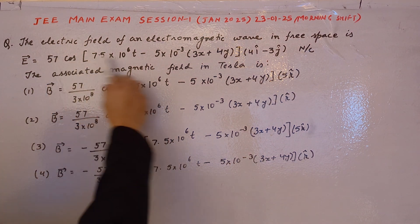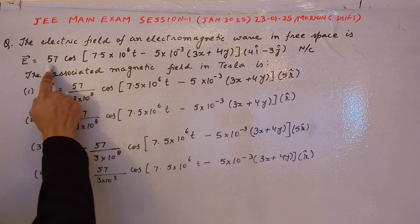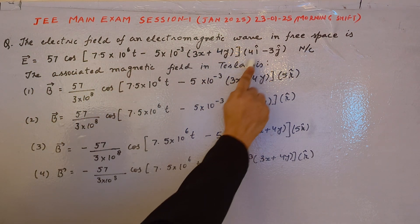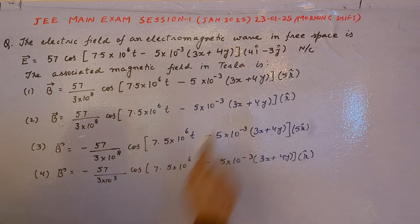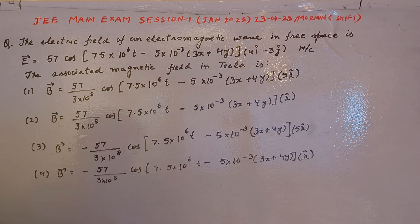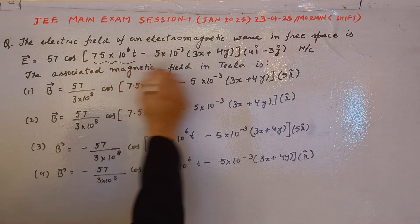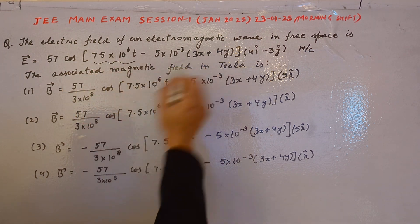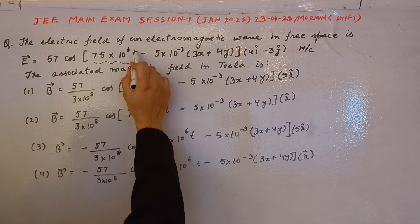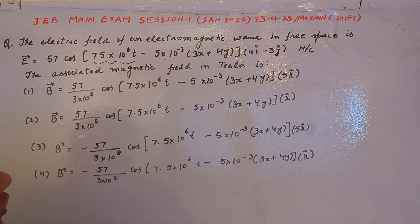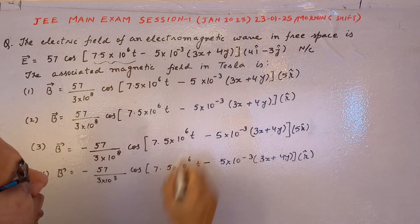From the expression of electric field, you can see there is a magnitude of 57, then cos of an expression, and a vector denoting the direction of the electric field. From the general equation of the electric field wave, there are two terms inside the bracket: one term containing t and another term containing the direction of the electromagnetic wave.